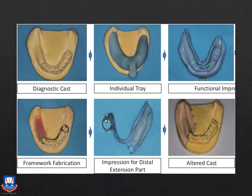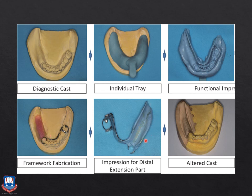The altered cast impression technique results in a cast in two colors: the master cast is poured in Type 3 dental stone, while the primary focus — the distal extension denture area — is poured in Type 4 or Type 5 high-strength, high-expansion dental stone or die stone. This is one of the most widely accepted impression techniques used nowadays, especially for Kennedy's Class 1 and Class 2 situations.